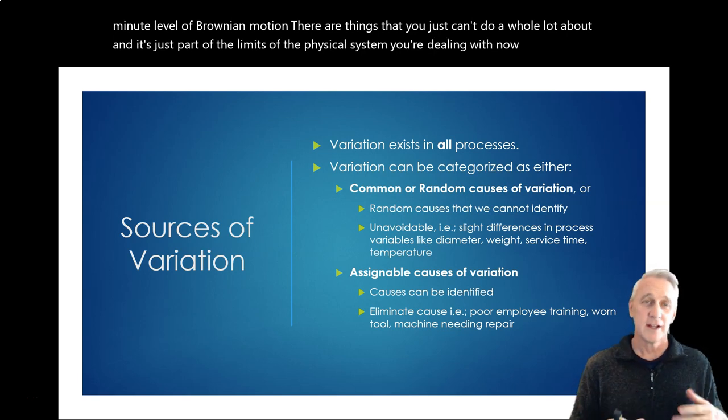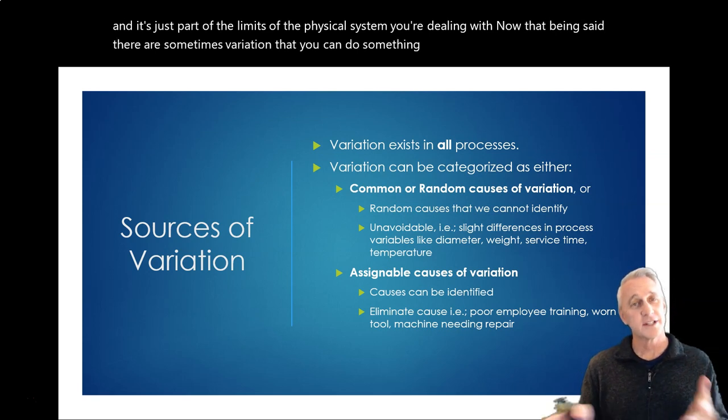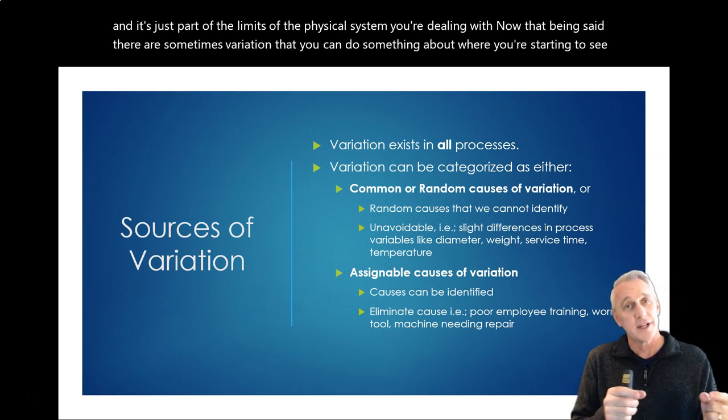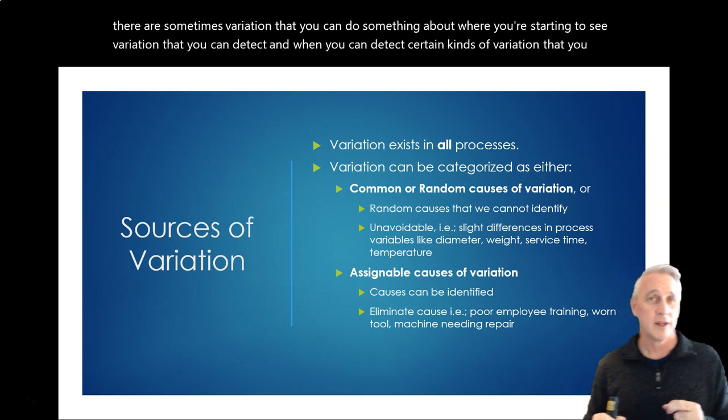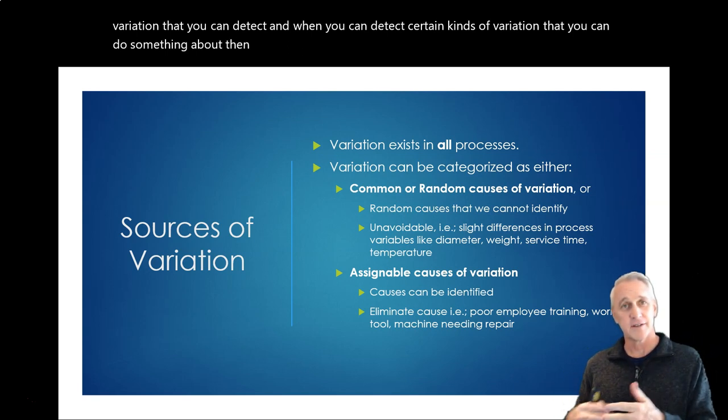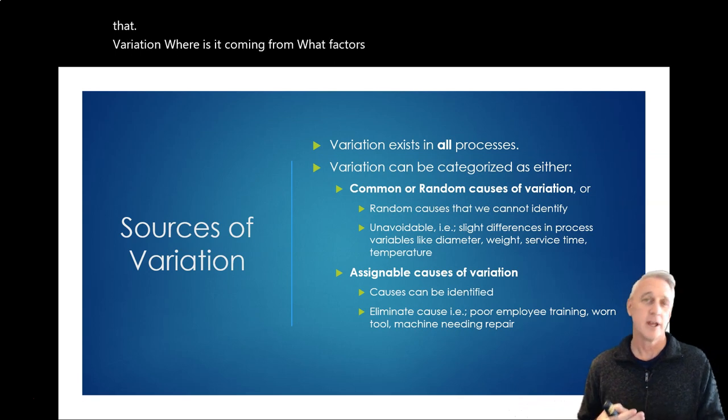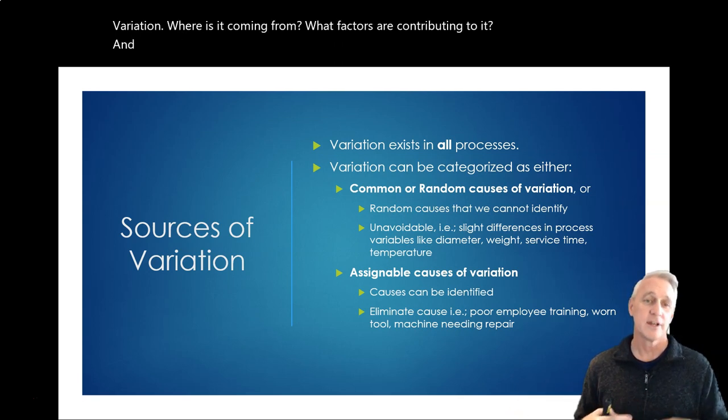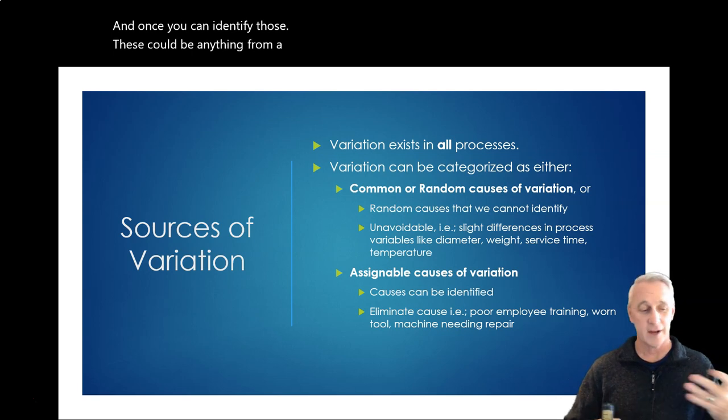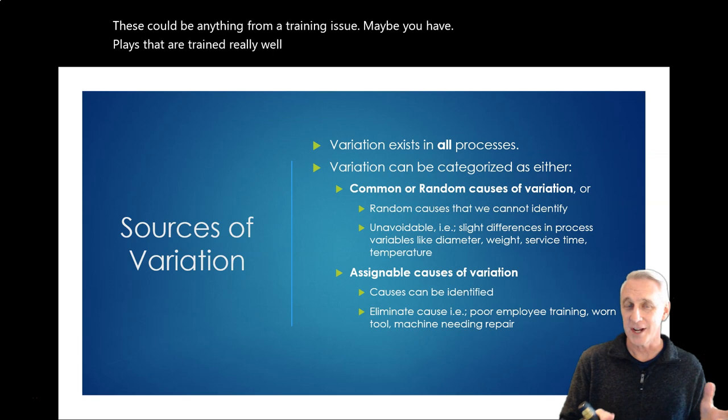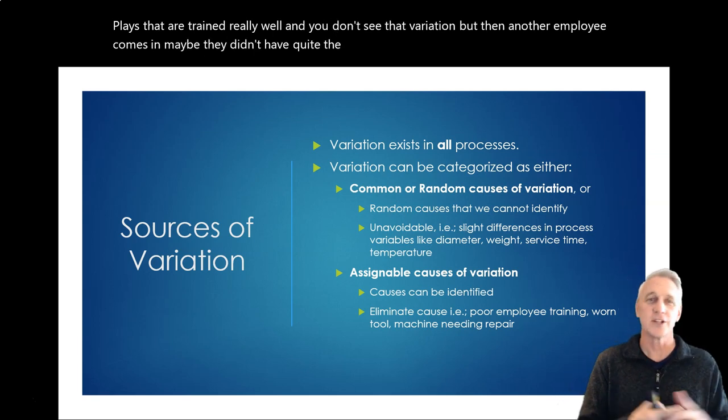Now, that being said, there's sometimes variation that you can do something about, where you're starting to see variation that you can detect. And when you can detect certain kinds of variation that you can do something about, then it becomes a diagnostic of trying to figure out what is the cause of that variation? Where is it coming from? And what factors are contributing to it? And once you can identify those, these could be anything from a training issue. Maybe you have employees that are trained really well, and you don't see that variation, but then another employee comes in. Maybe they didn't have quite the right training, and so they're getting a variation in what they're doing.